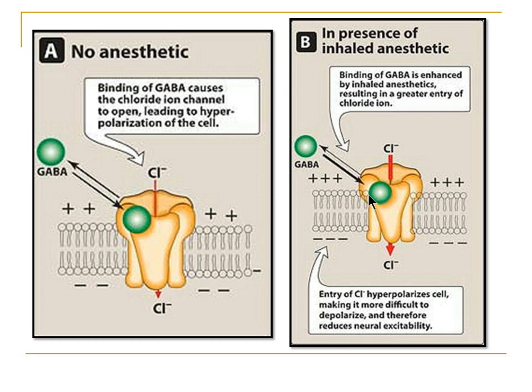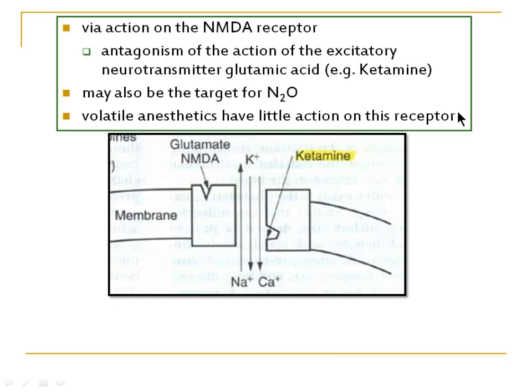With the binding of the anaesthetic, there is greater influx through the chloride channel by increasing the activity of neurotransmitter GABA, so that the cell becomes more inexcitable — resulting in depression of the neuron and ultimately depression of the Central Nervous System.